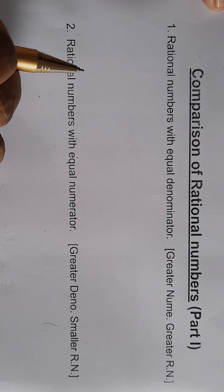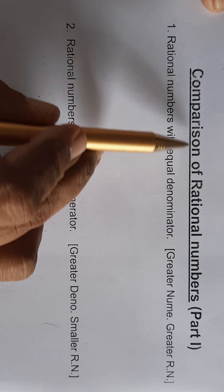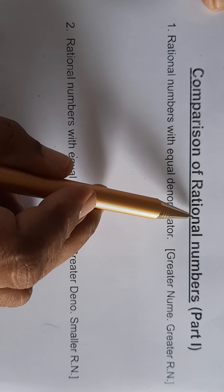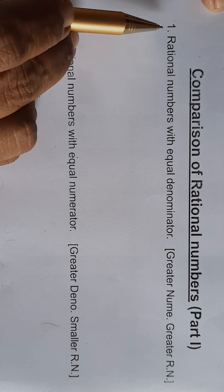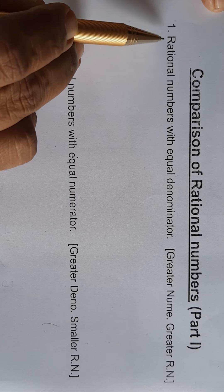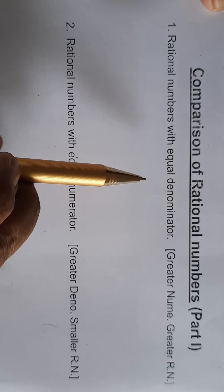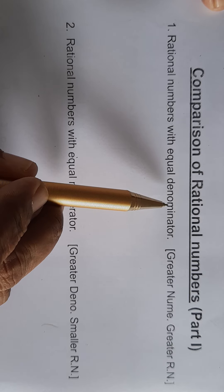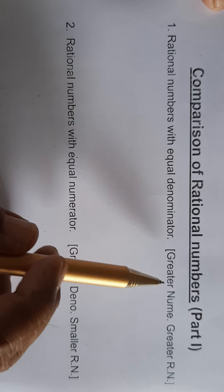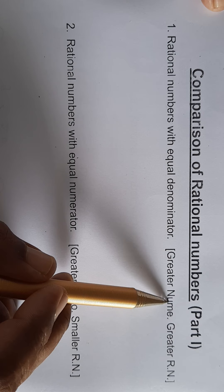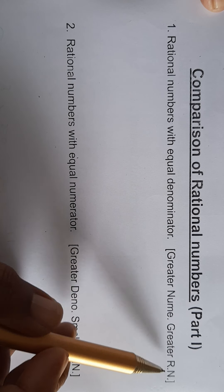Hello students, today we learn the comparison of rational numbers, part 1. First: rational numbers with equal denominators. When denominators of rational numbers are equal, then the greater numerator is the greater rational number.